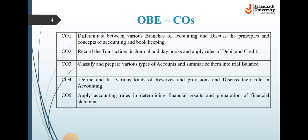Now we will discuss some of the course outcomes, which are as follows. CO1 is to differentiate between various branches of accounting and discuss the principles and concepts of accounting and bookkeeping. CO2 is to record the transactions in journal and daybooks and apply rules of debit and credit.